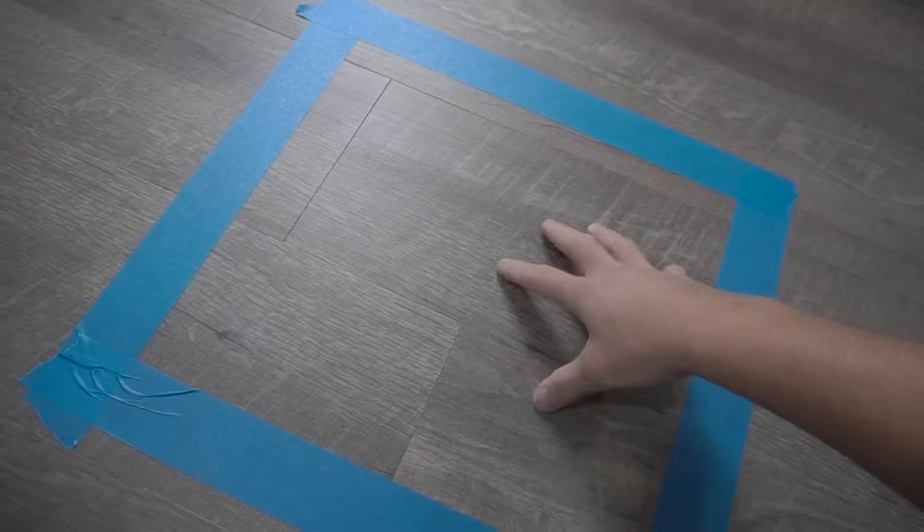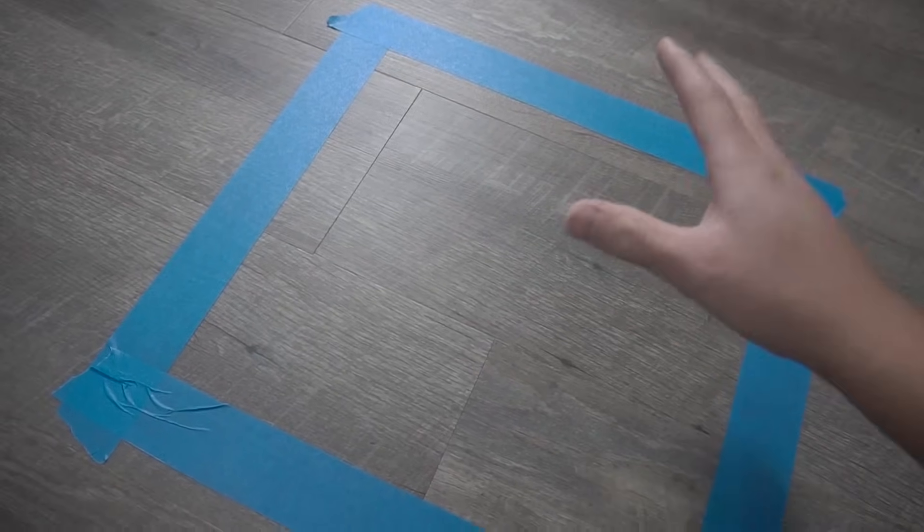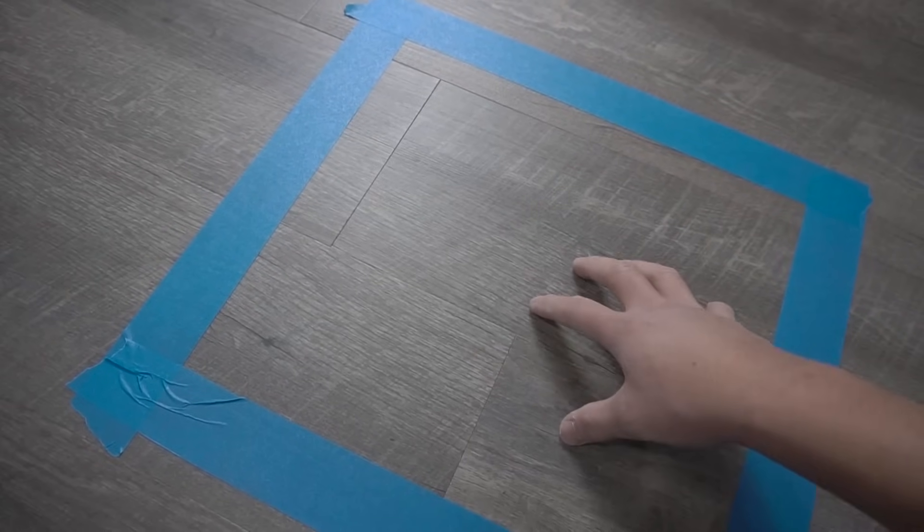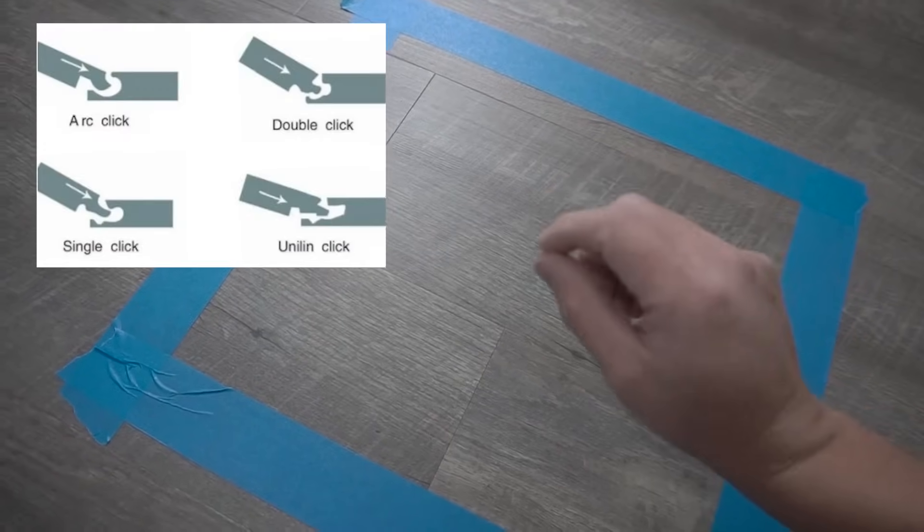So now that you found out where your hollow spot is, there are things that you have to consider. One is, do you have vinyl plank flooring, laminate flooring, or engineered hardwood that has the click system?